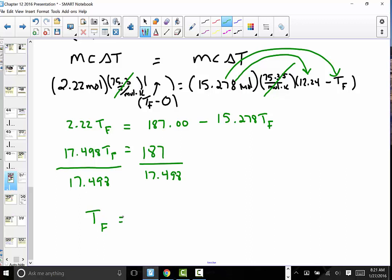187 divided by that previous answer, and I'm finding a value of 10.686, I'll say, I'll round here finally. 10.69°C.